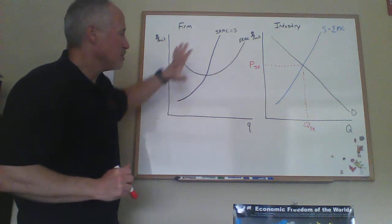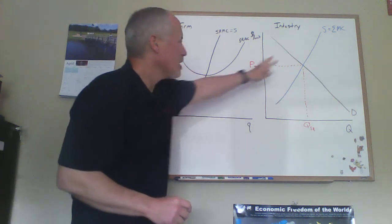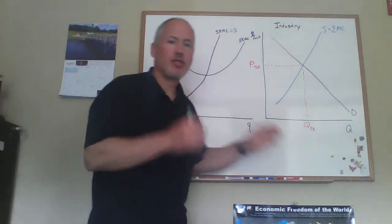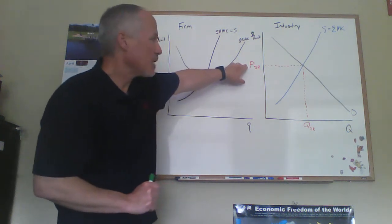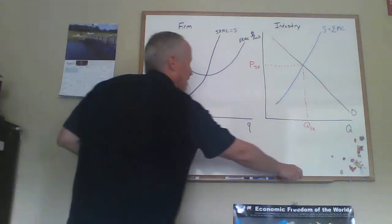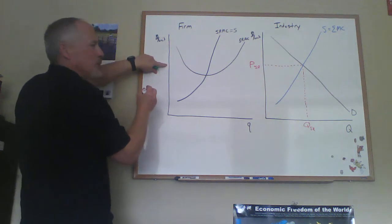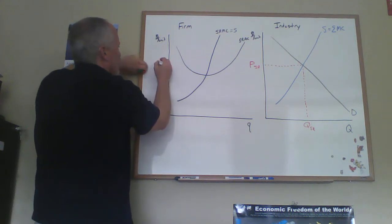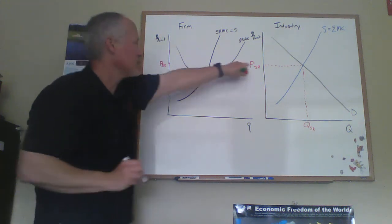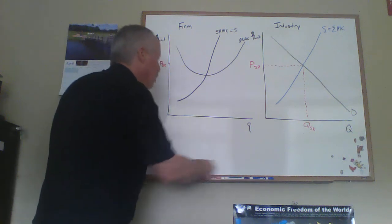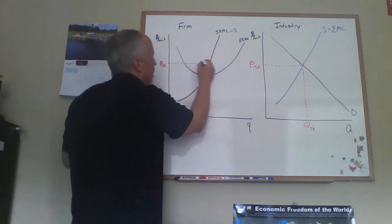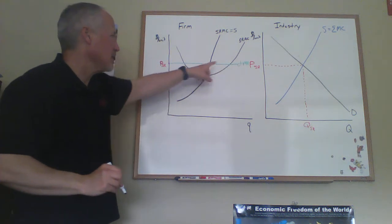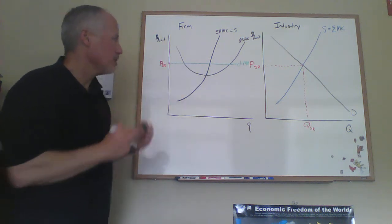Now we need to get the firm's behavior. We already know it because the marginal cost curve is their supply curve, but we want to draw it on the firm diagram. In perfect competition, a firm is a price taker — they take the price set in the market as given. So we bring that same price P-SR over to the firm diagram. The vertical axes measure the same thing, so we can transfer directly. We then draw in the horizontal demand curve for the firm, because the firm is a price taker and their marginal revenue curve is horizontal at that price.